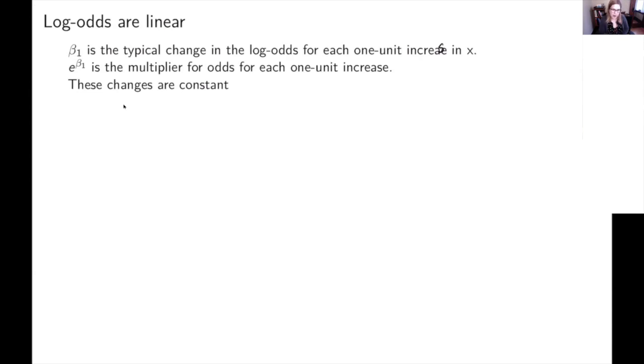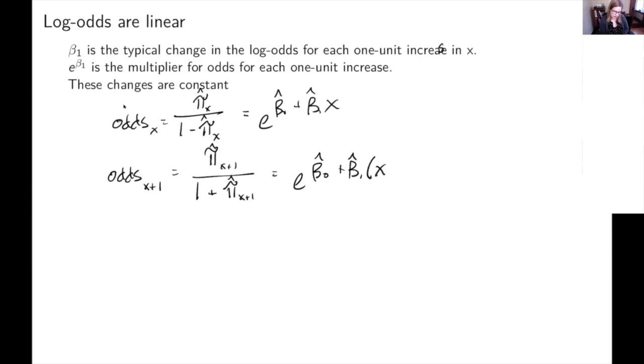So we often want to know about odds ratios for logistic regression. I'm going to say the odds of X are going to be pi over 1 minus pi, and I'm going to put hats on my pis because they're going to be the fitted values. That's going to be e to the beta 0 hat plus beta 1 hat X. And then I want to think about what if I had a one unit increase in X. So then I would have the odds of X plus 1, which will be e to the beta 0 hat plus beta 1 hat X plus one.